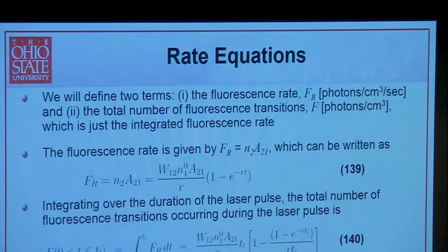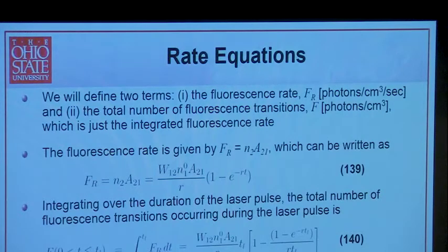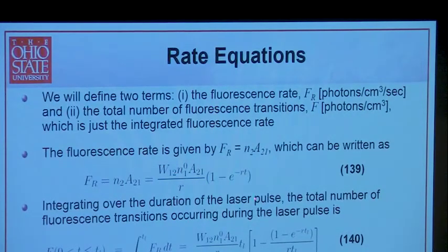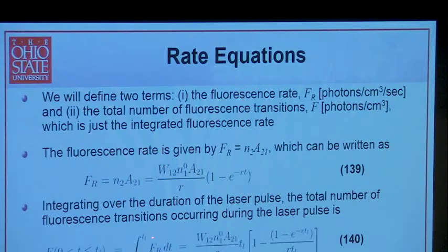If we integrate over the duration of the laser pulse — whether it's a 9, 10, or more nanosecond or even microsecond pulse — photons are coming over the duration of that pulse and sending things to the upper state. So if we integrate from zero to the duration of the laser pulse, the total number of transitions can be written by integrating the fluorescence rate over that duration.